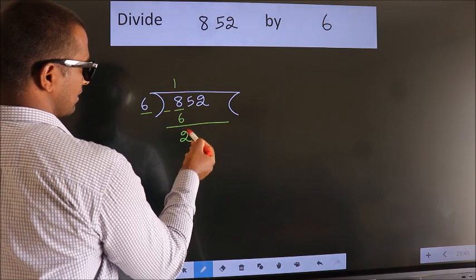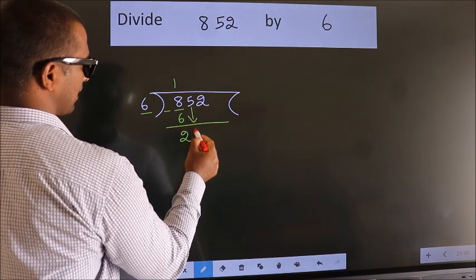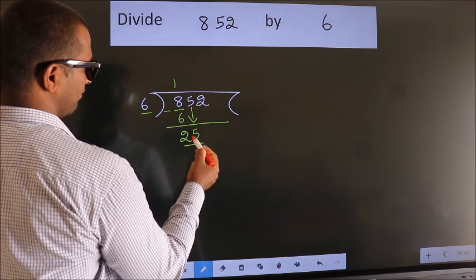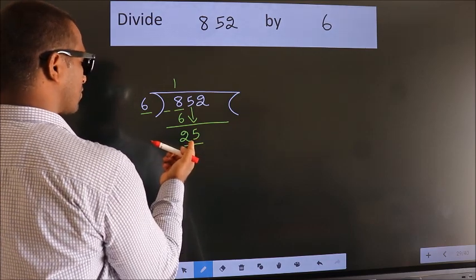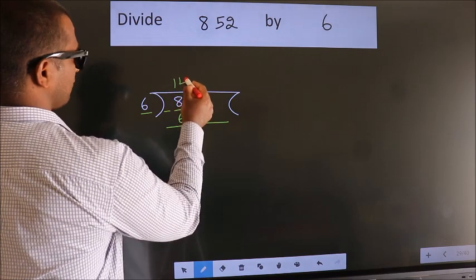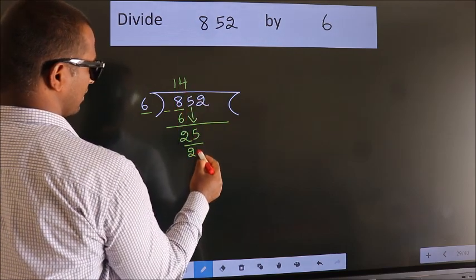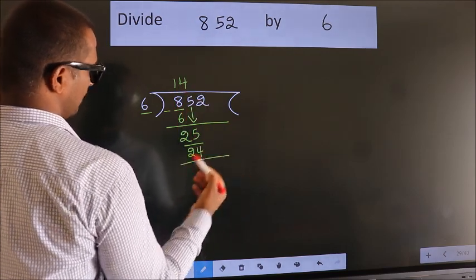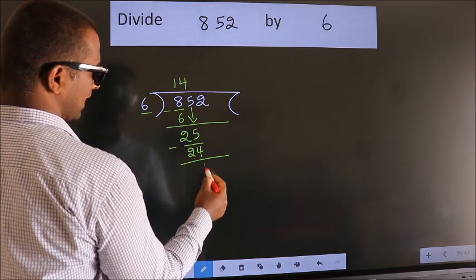After this, bring down the beside number. 5 down. So, 25. A number close to 25 in 6 table is 6 fours 24. Now we subtract. We get 1.